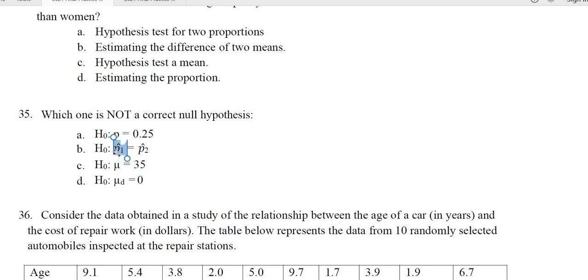But b is not. This is a sample proportion and this is another sample proportion. So, that is not a statement about a parameter. That is not a valid null hypothesis.